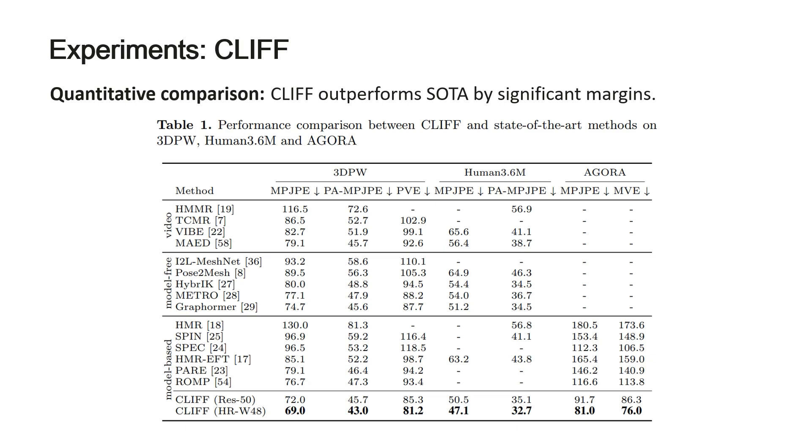Here are the experiments and results. CLIFF outperforms SOTA by significant margins on three popular benchmarks. With ResNet-50, CLIFF beats its baseline HMR-FT, reducing the errors by more than 13mm.